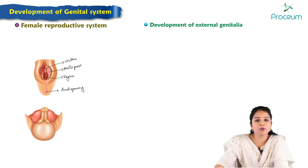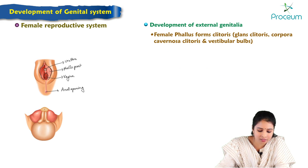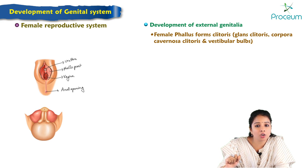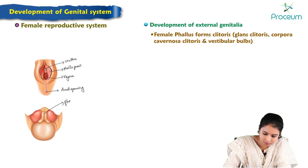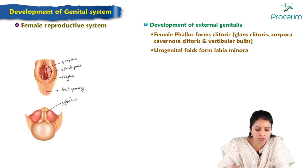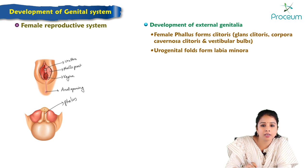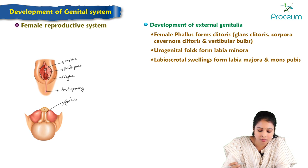Regarding development of female external genitalia: the female phallus forms the clitoris (glans clitoris), corpora cavernosa clitoris, and vestibular bulbs. The urogenital folds form the labia minora, and the labioscrotal swellings form the labia majora and mons pubis in females.